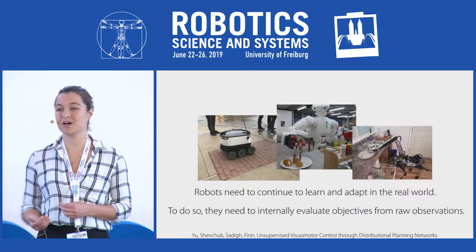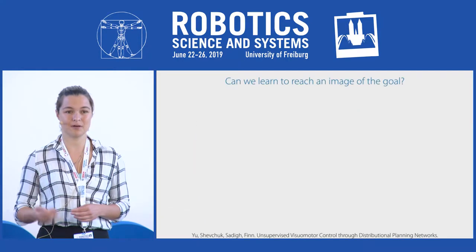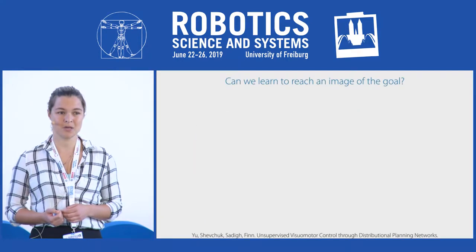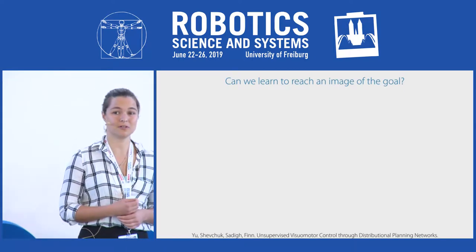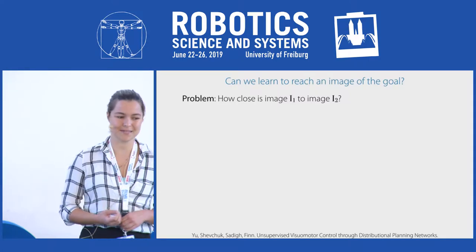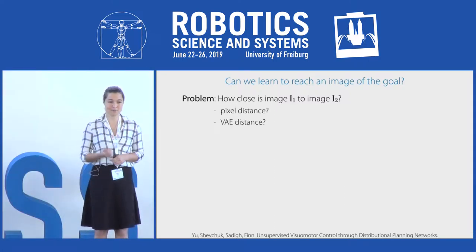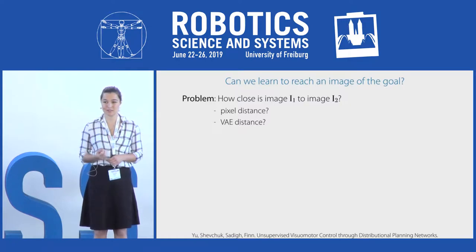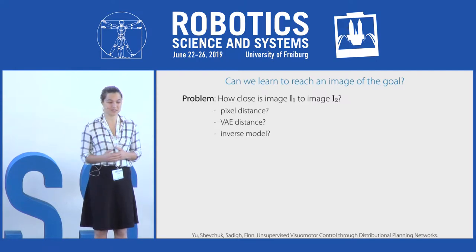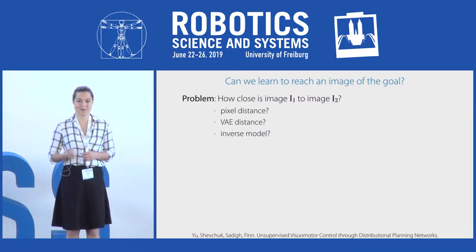If we hope to deploy robots into real-world environments, robots need to be able to internally evaluate objectives from raw observations. We aim to enable autonomous reinforcement learning without manually specified reward functions and without environment instrumentation. We consider a restricted setting where we want to reach different goals specified by a goal image. The key challenge is determining how close two images are — pixel distance or distance in the latent space of a variational autoencoder pays attention to the most salient objects, not necessarily how hard it is to reach that image.